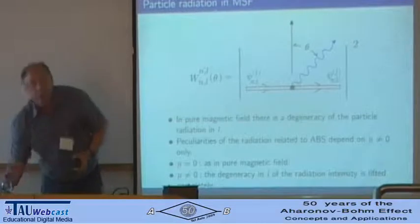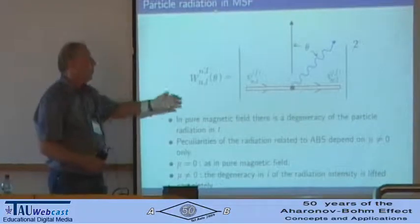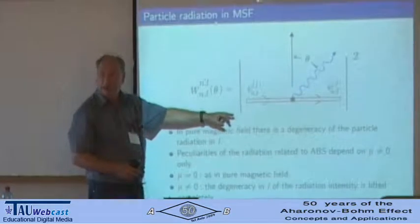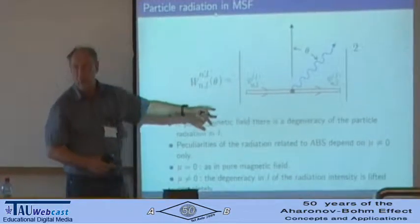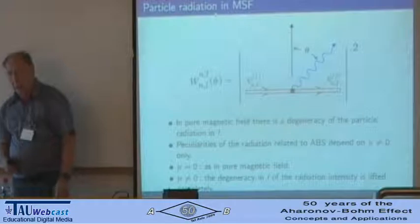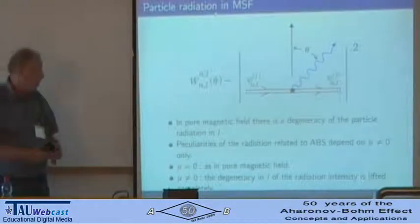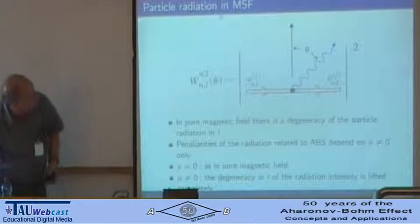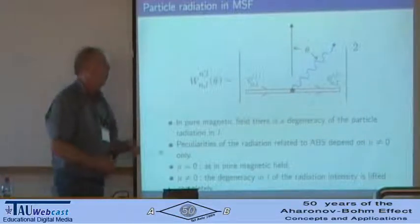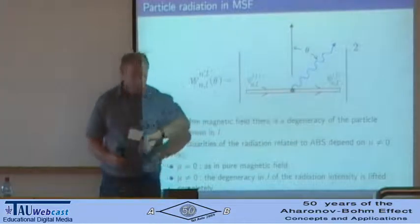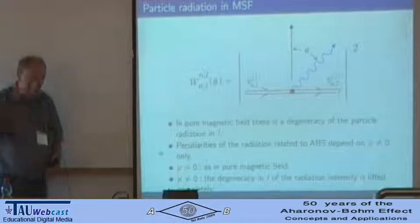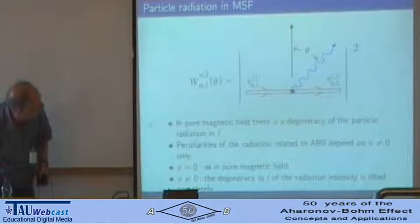Using these wave functions, we can calculate this Feynman diagram. This is the usual way to obtain radiation — one-photon radiation. We have calculated this, and it is not a simple task, because in fact we have to repeat all the calculations to get synchrotron radiation, which took people many, many years.